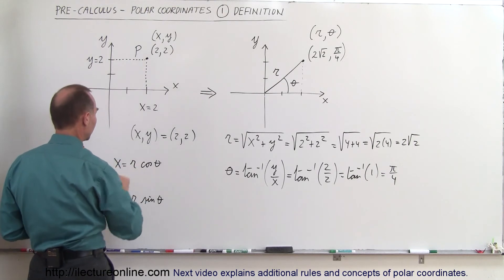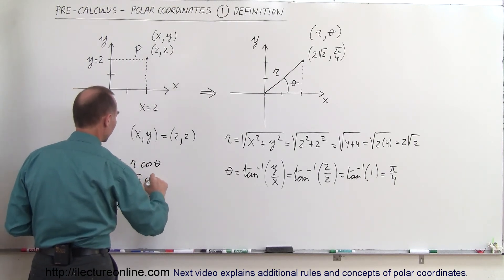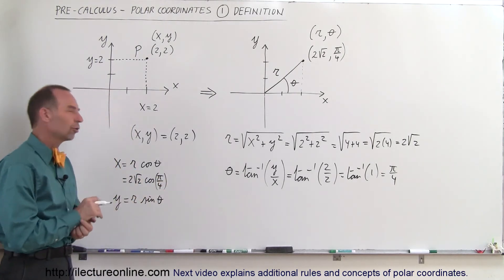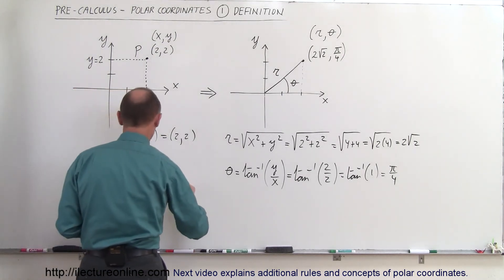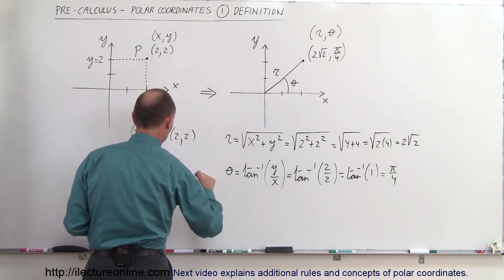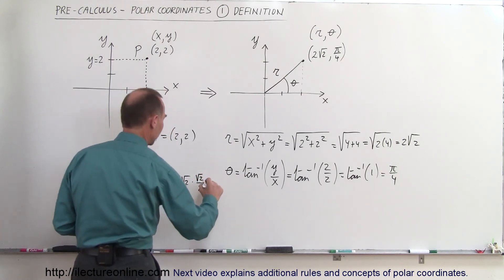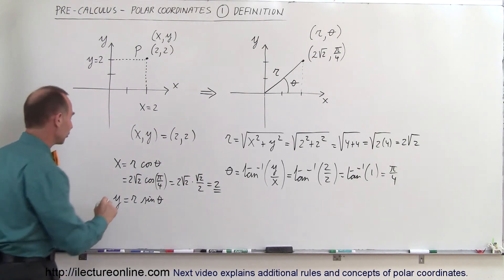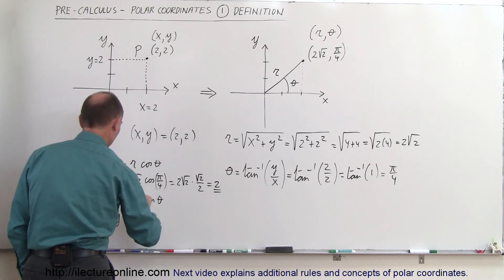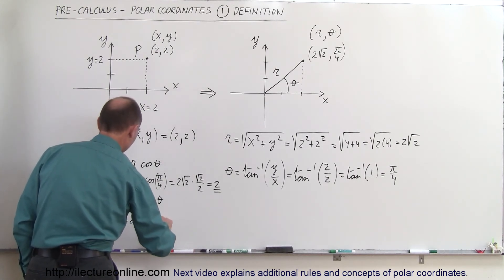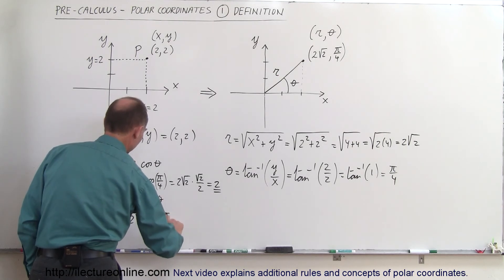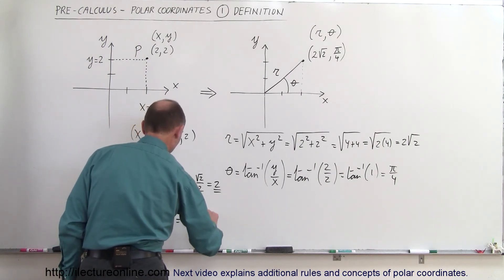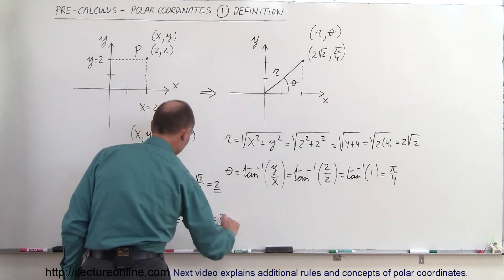So in this case, x equals 2 times the square root of 2 times the cosine of pi over 4. The cosine of pi over 4 is the square root of 2 over 2, so x equals 2 times the square root of 2 times the square root of 2 over 2, which equals 2 — exactly what we expected. Similarly, y equals 2 times the square root of 2 times the sine of pi over 4. Since sine and cosine of pi over 4 are equal, y also equals 2 times the square root of 2 times the square root of 2 over 2, which equals 2.